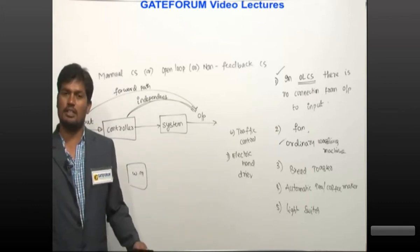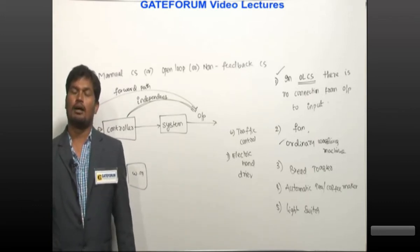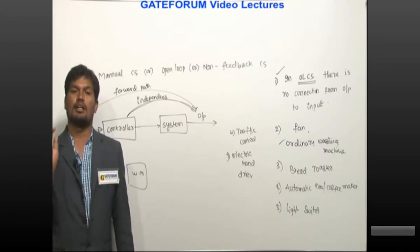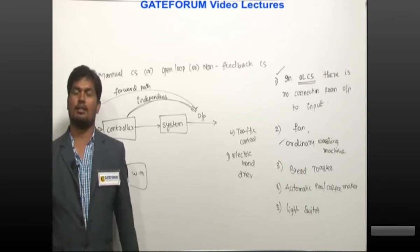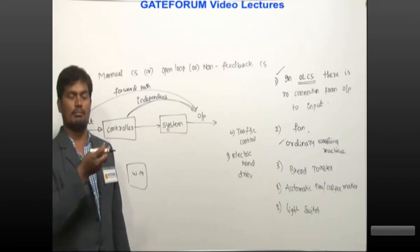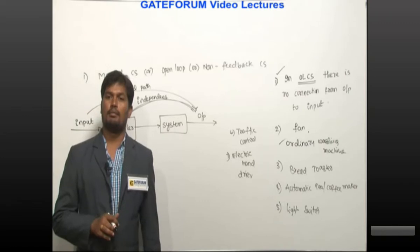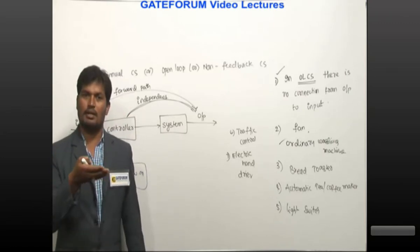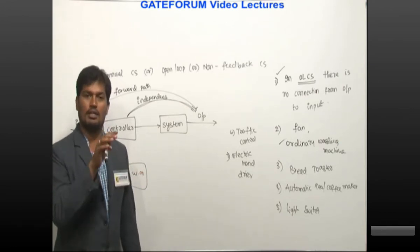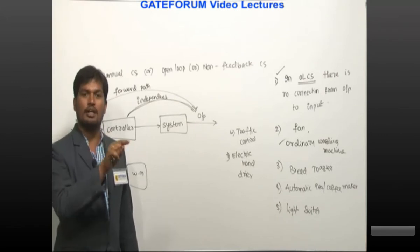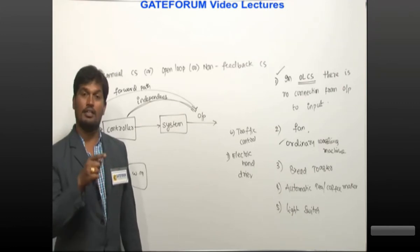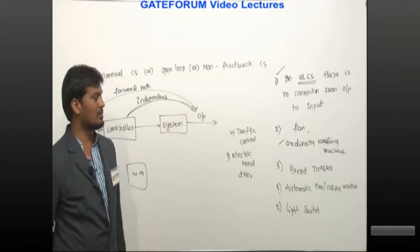For bread toaster: it also works according to preset time. Even though the bread is toasted or not, the machine runs for the set time — for example in a bakery, the shopkeeper puts the burger or pizza inside a microwave or bread toaster and sets the time; it will bake according to that time even if it is already toasted. That is also an open loop system.